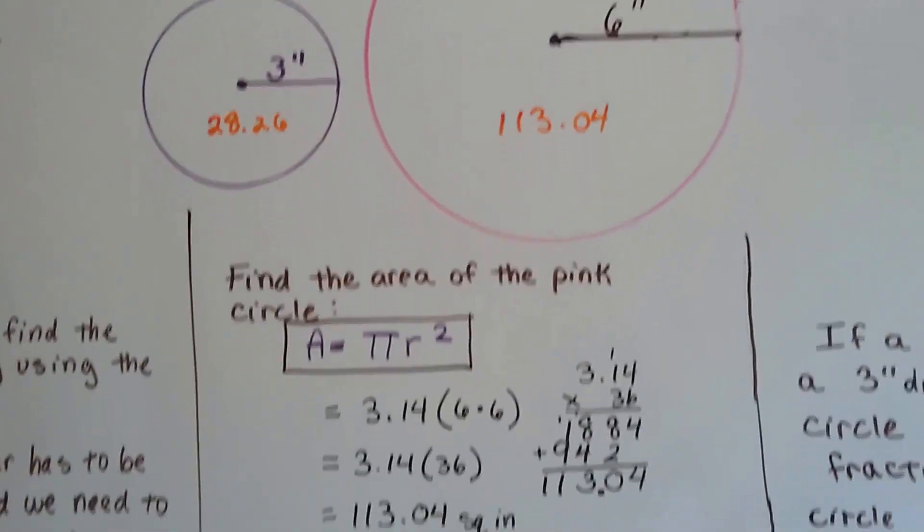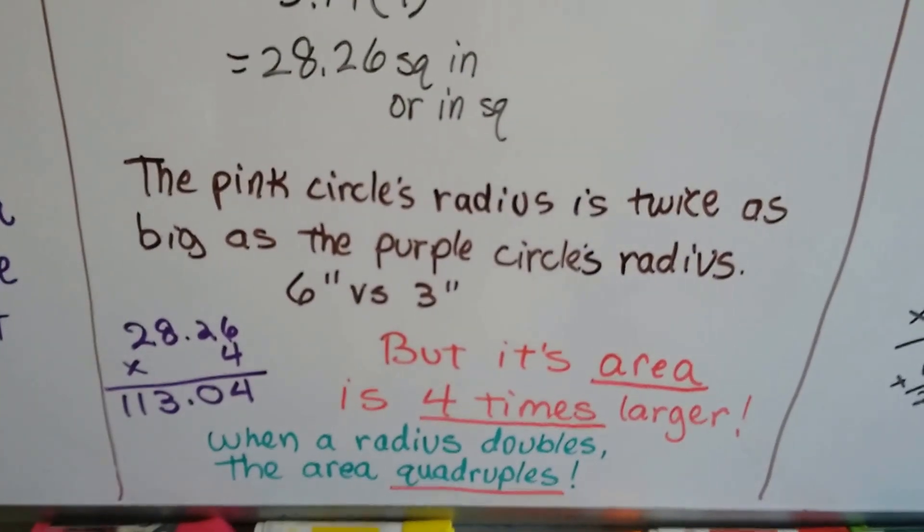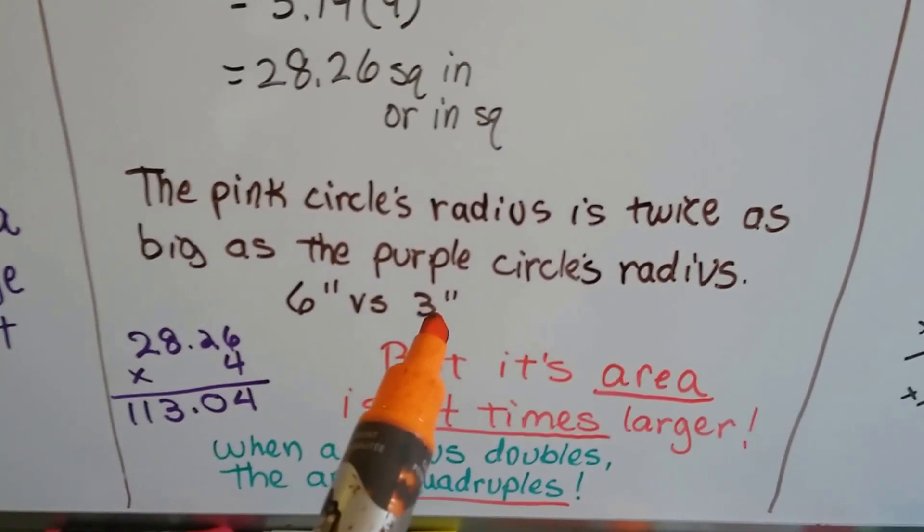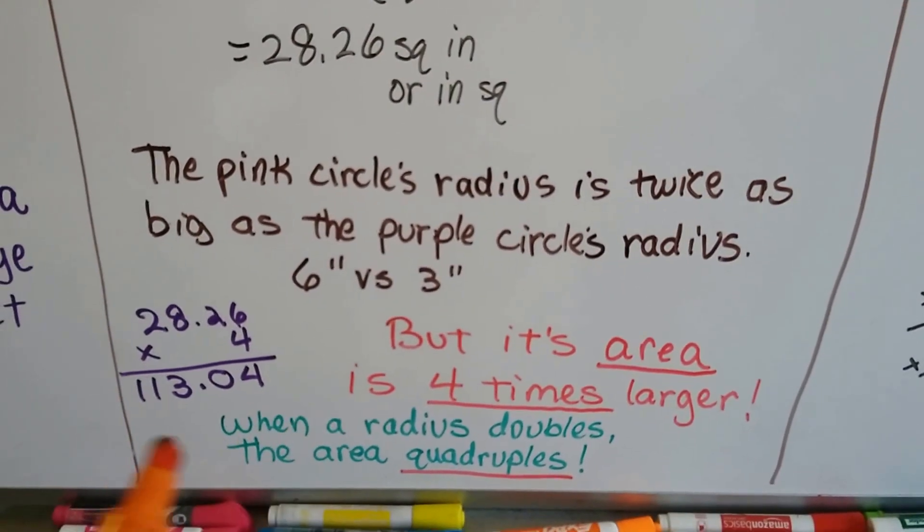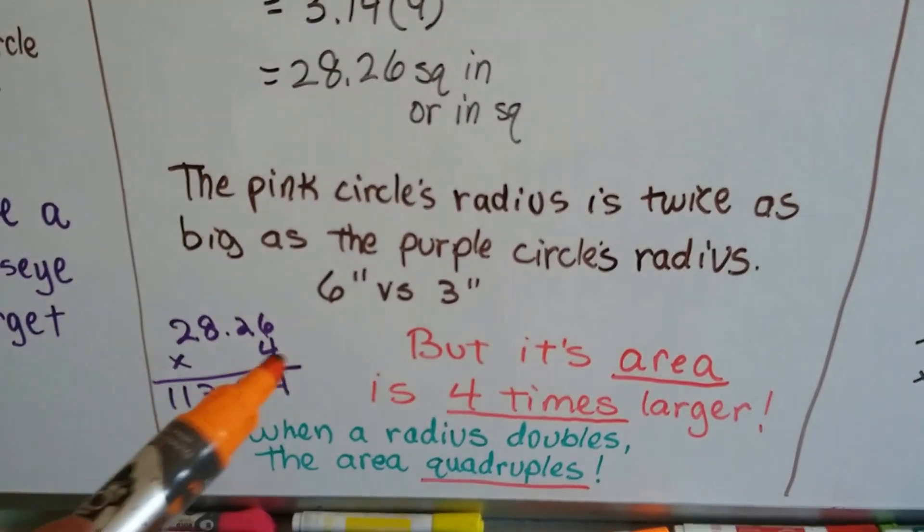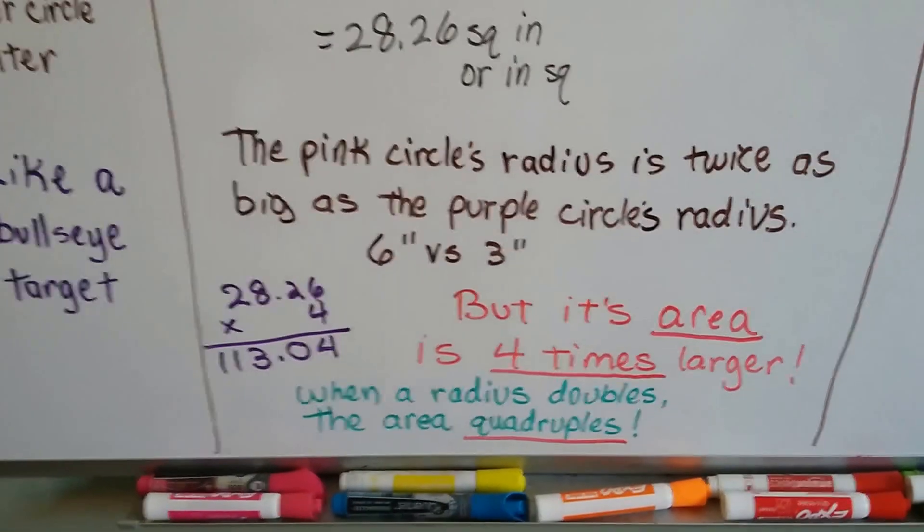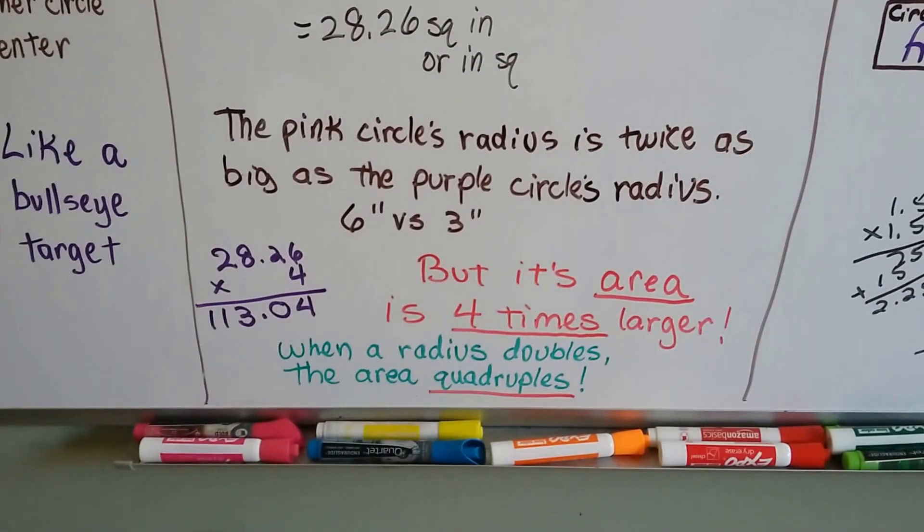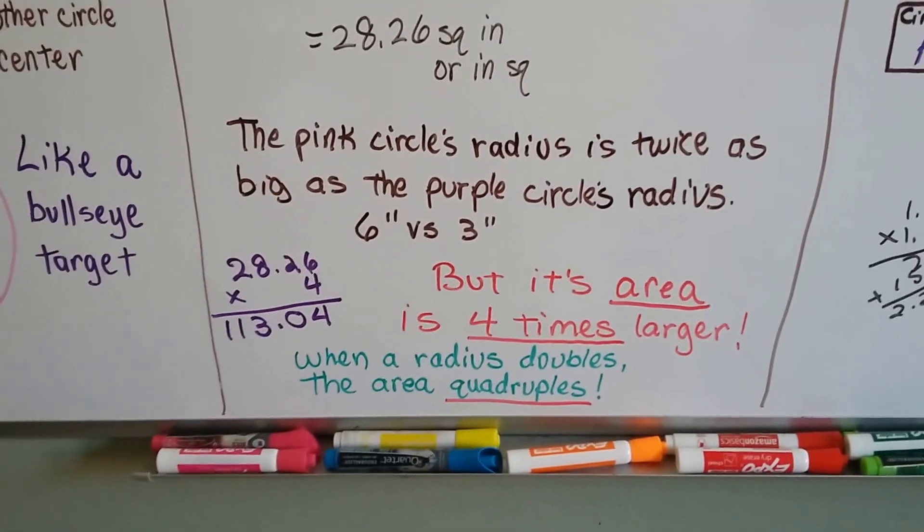It's not double, is it? The pink circle's radius is twice as big as the purple circle's radius. 6 inches versus 3 inches. But its area is 4 times larger. The area of the purple one is 28.26. If we multiply that by 4, it's the 113.04. That's the area of the large one. It's multiplied by 4. When a radius doubles, the area quadruples. It's 4 times bigger.